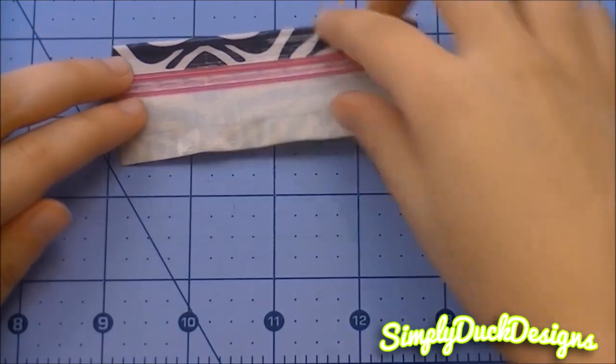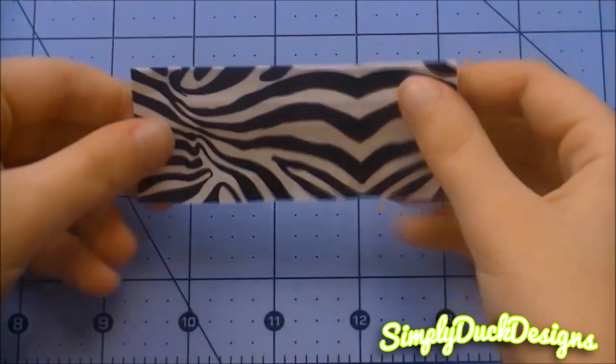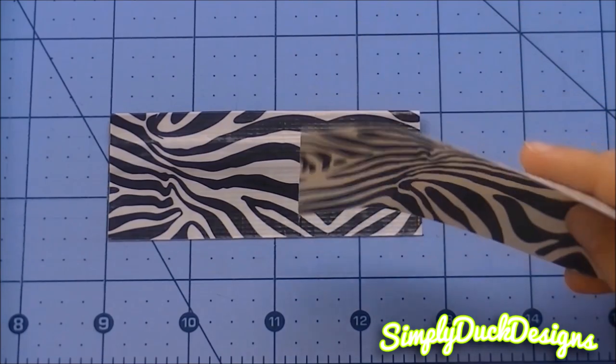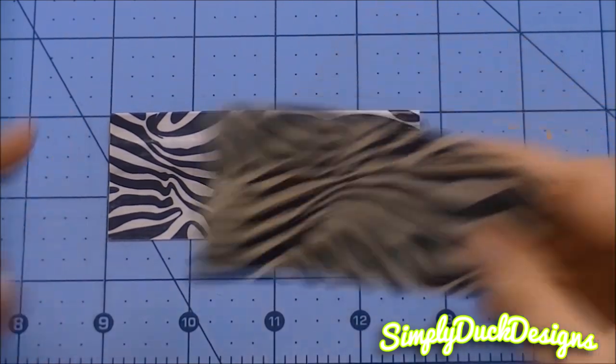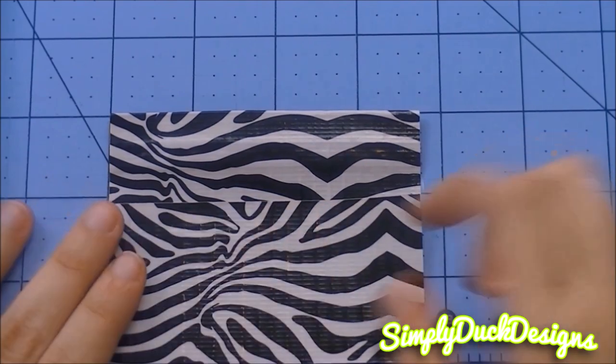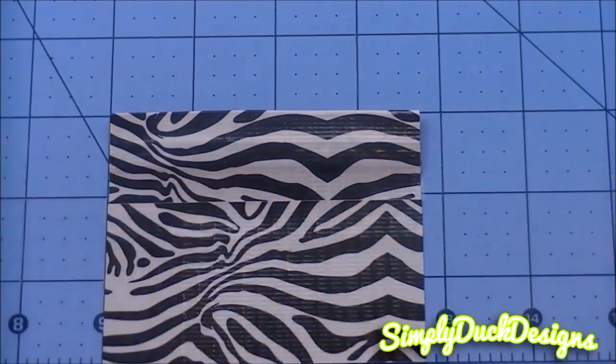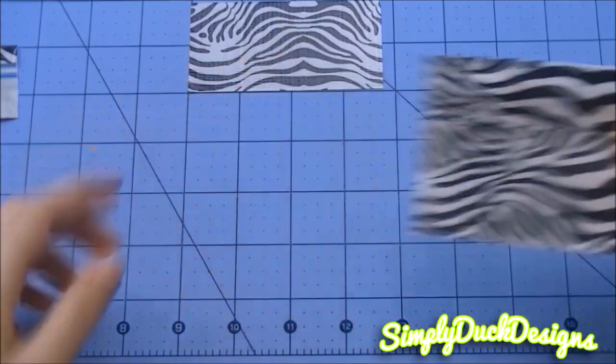And now what we're going to do is we're going to flip it over. Then we're going to take our pattern piece and we're going to make it that it is 3 inches tall. So this is what your first piece should look like.